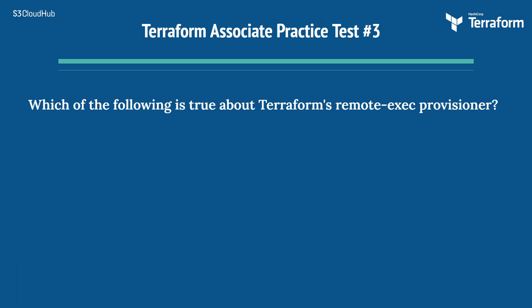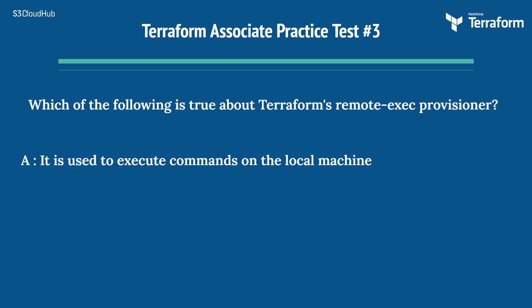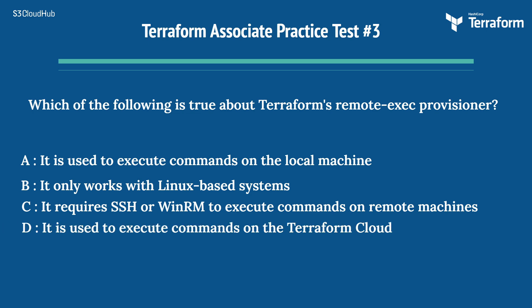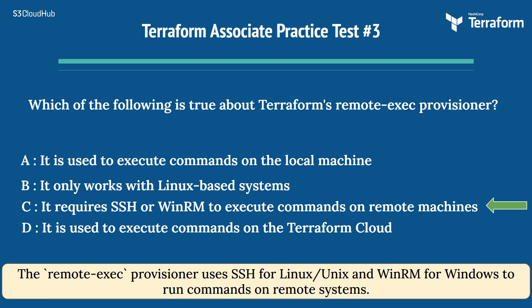The third question is: which of the following is true about Terraform's remote-exec provisioner? Option A: it is used to execute commands on the local machine. Option B: it only works with Linux-based systems. Option C: it requires SSH or WinRM to execute commands on remote machines. Option D: it is used to execute commands on Terraform cloud. The right answer is Option C. The remote-exec provisioner uses SSH for Linux and WinRM for Windows to run commands on remote systems.